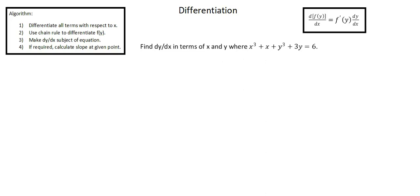Hi, this is Thomas. Welcome back. Our topic is differentiation. This is implicit differentiation example 1. Our requirement reads: find the derivative of y with respect to x in terms of x and y, where x to the power of 3 plus x plus y to the power of 3 plus 3y equals 6.